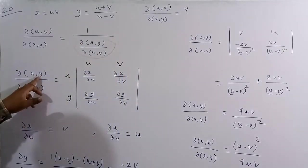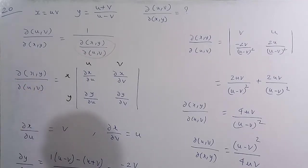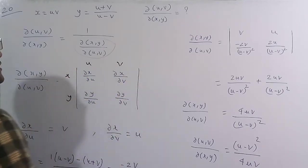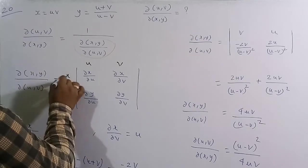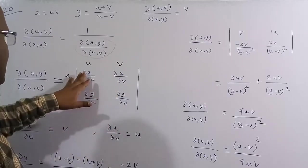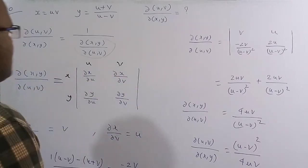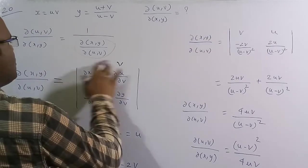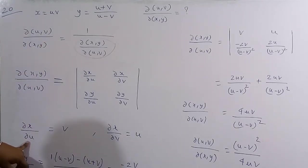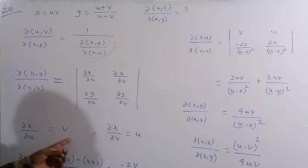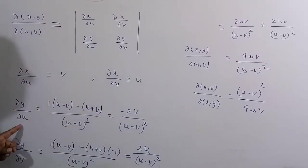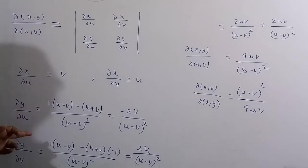The Jacobian ∂(x,y)/∂(u,v) is the determinant: |∂x/∂u  ∂x/∂v; ∂y/∂u  ∂y/∂v|. Since x = uv: ∂x/∂u = v and ∂x/∂v = u. Since y = (u+v)/(u−v): using the quotient rule, ∂y/∂u = [(u−v)−(u+v)]/(u−v)² = −2v/(u−v)².